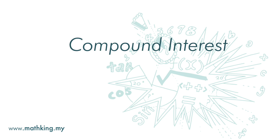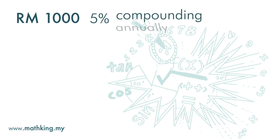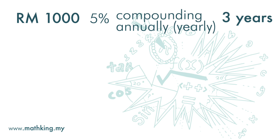Next, we are going to look at compound interest. Let's take the example we used earlier. You deposit RM1,000 into a bank, and the bank pays an interest of 5%, compounding annually. Annually means yearly. And you put the money in there for 3 years.